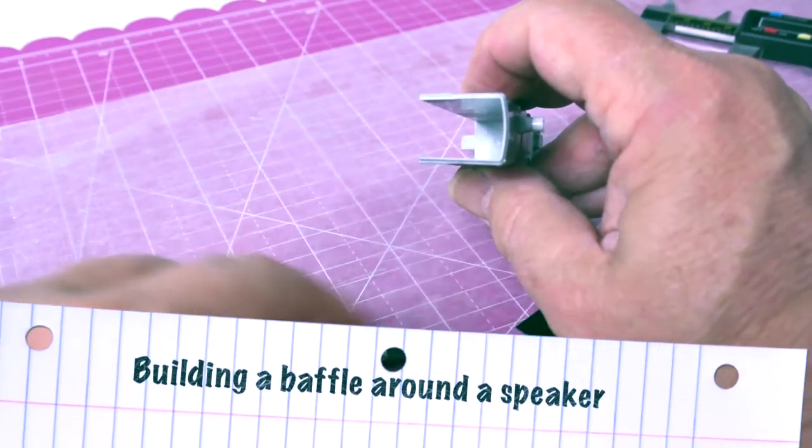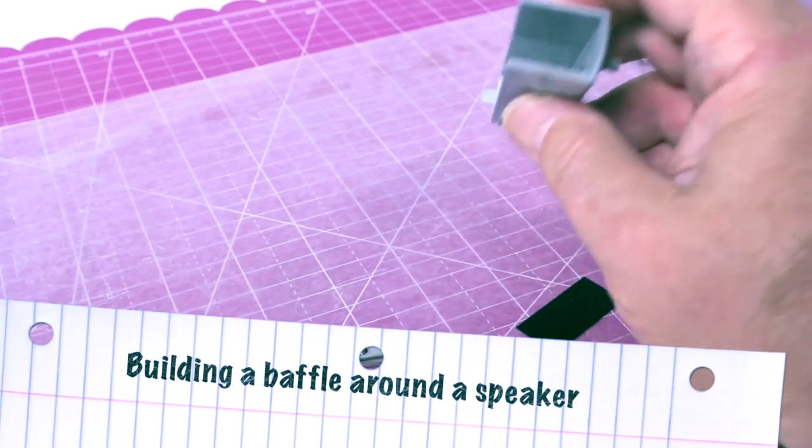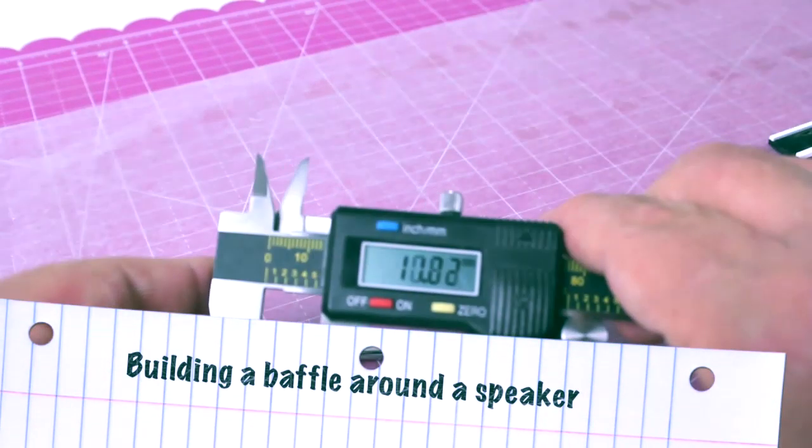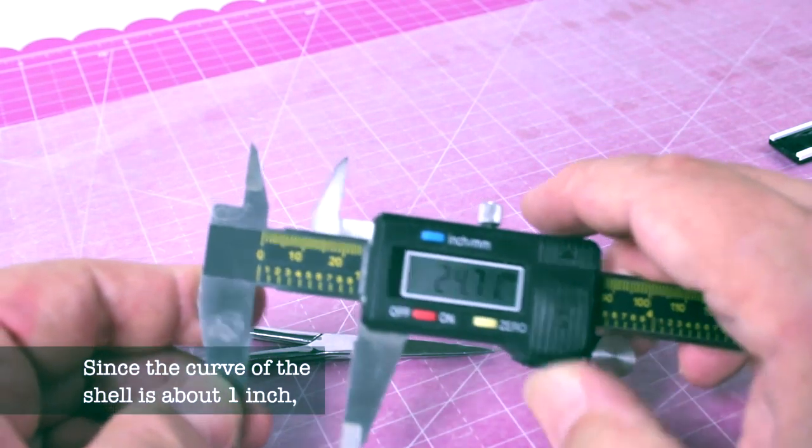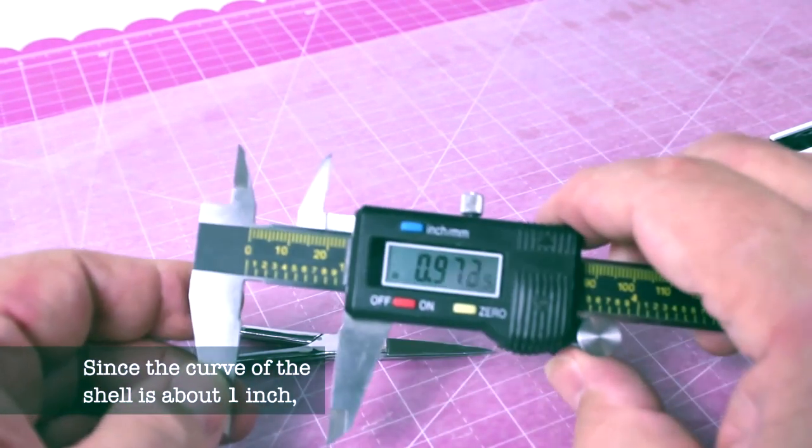Okay, in video number three we're going to deal with the speaker that we created in the assembly in video number two and figure out how to get it to fit into the shell, create a little baffle.